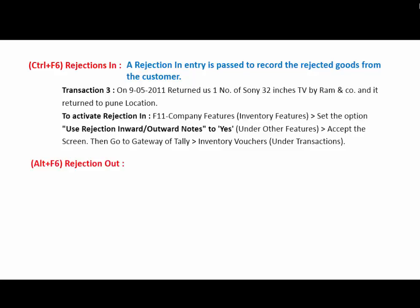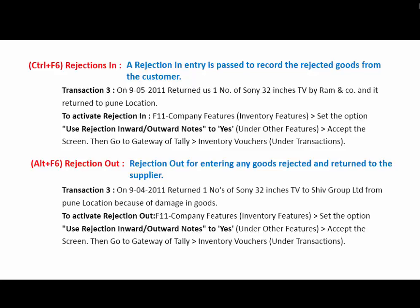Then, Rejection Out — the key used is ALT+F6. When purchased goods are sent back to suppliers due to poor quality or damage, then an entry will be made into Rejection Out. Any goods rejected and returned to the supplier: for example, on 9th April, return 1 unit of Sony 32-inch TV to Shiv Ltd. from Pune location because of damage in goods. For this, press F11 Company Features and set Use Rejection Inward/Outward Note to Yes, and then make the Rejection Out entry in the Rejection Out voucher type. With these both voucher types, Rejection In and Rejection Out, we also make entries using Debit Note and Credit Note voucher types.